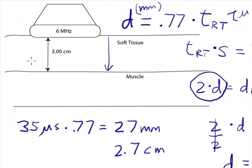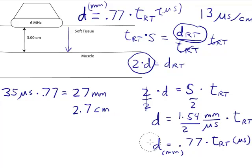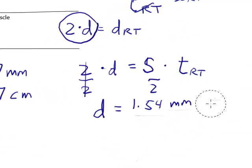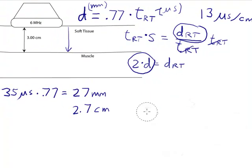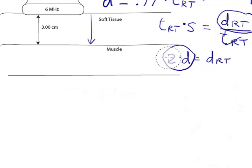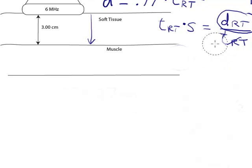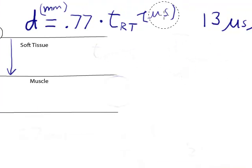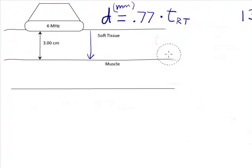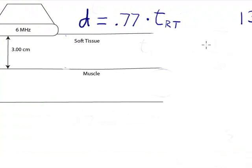All right. The next formula I want to look at, I'm going to erase some of this stuff so I have a little more room here. The next one I want to look at is the idea of this rule for 13 microseconds per centimeter.